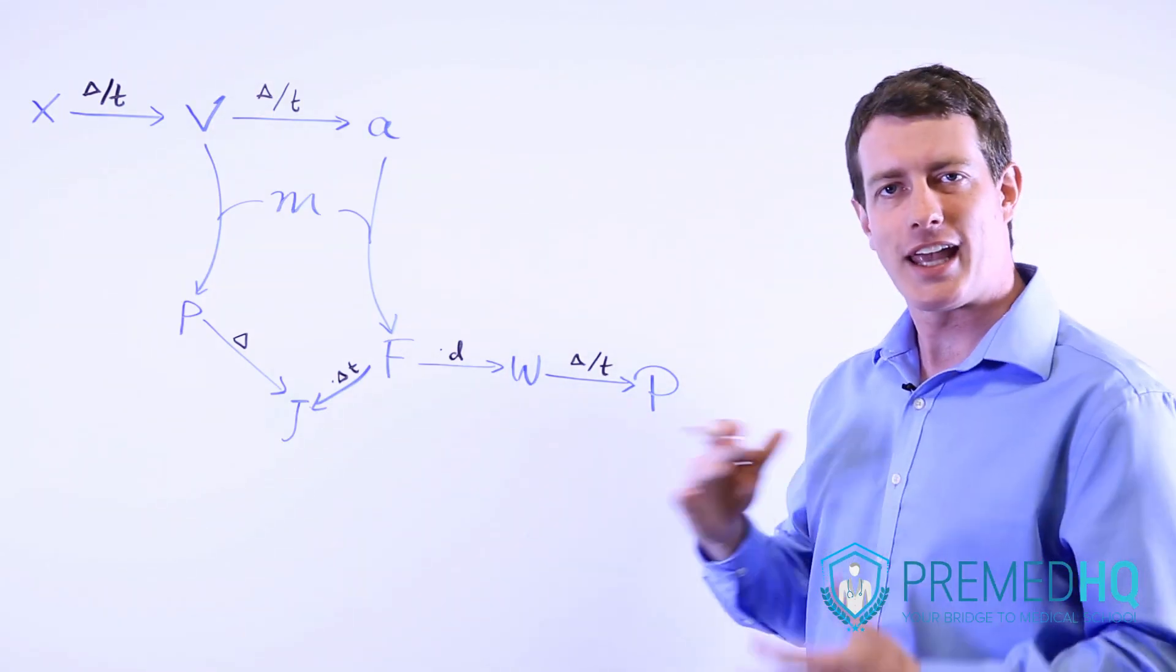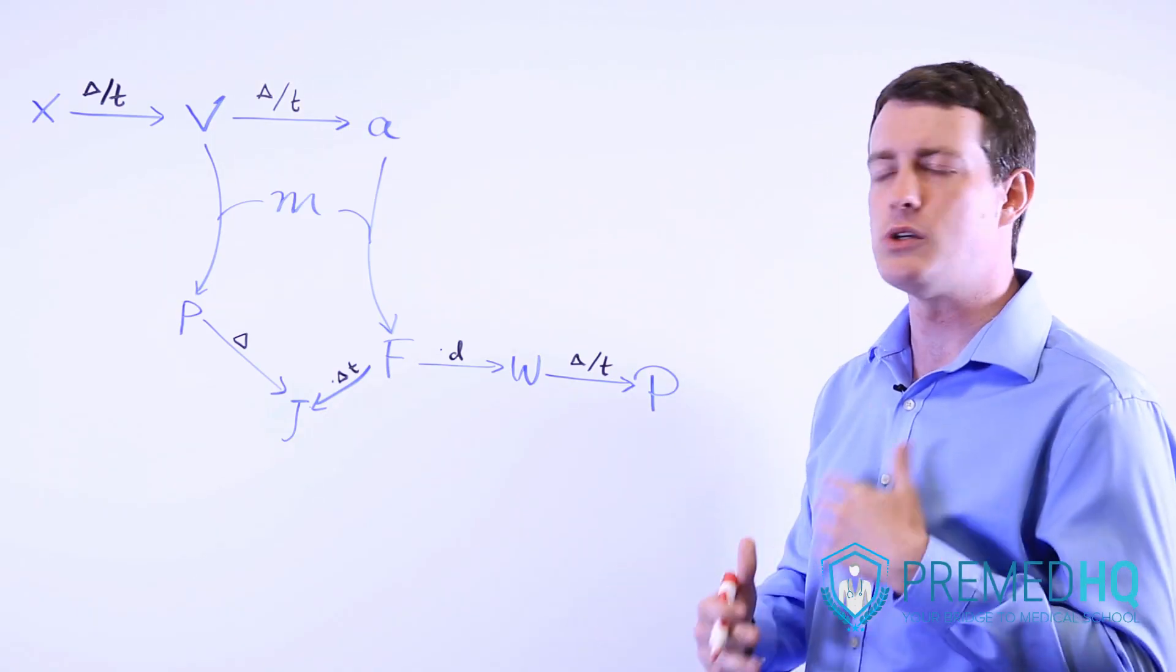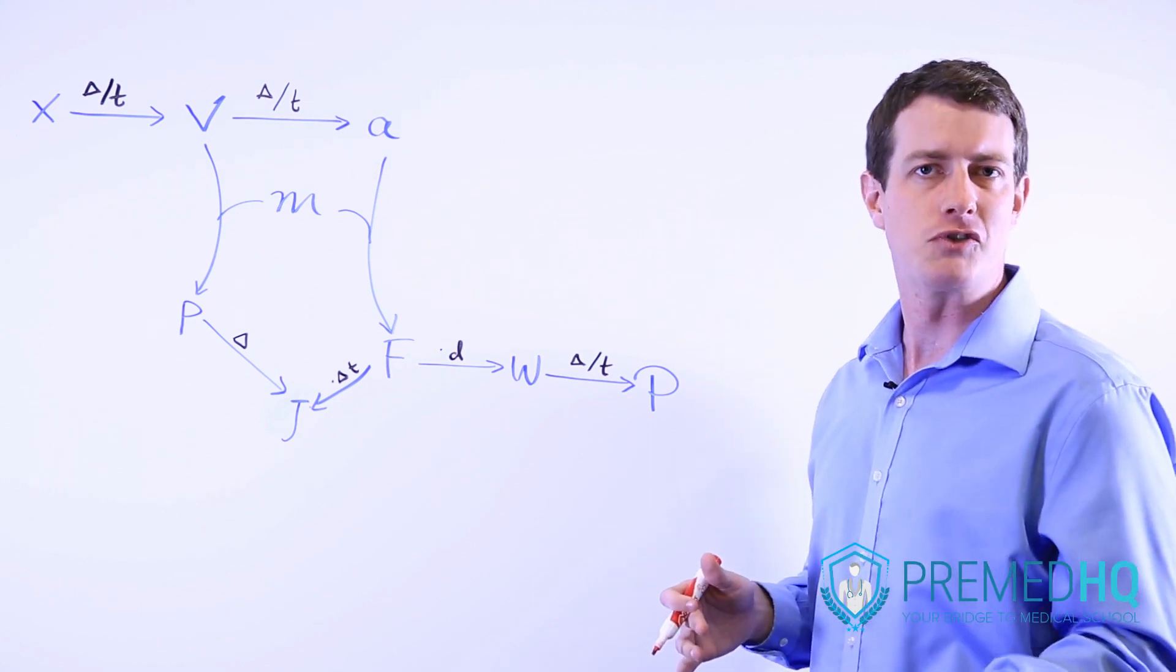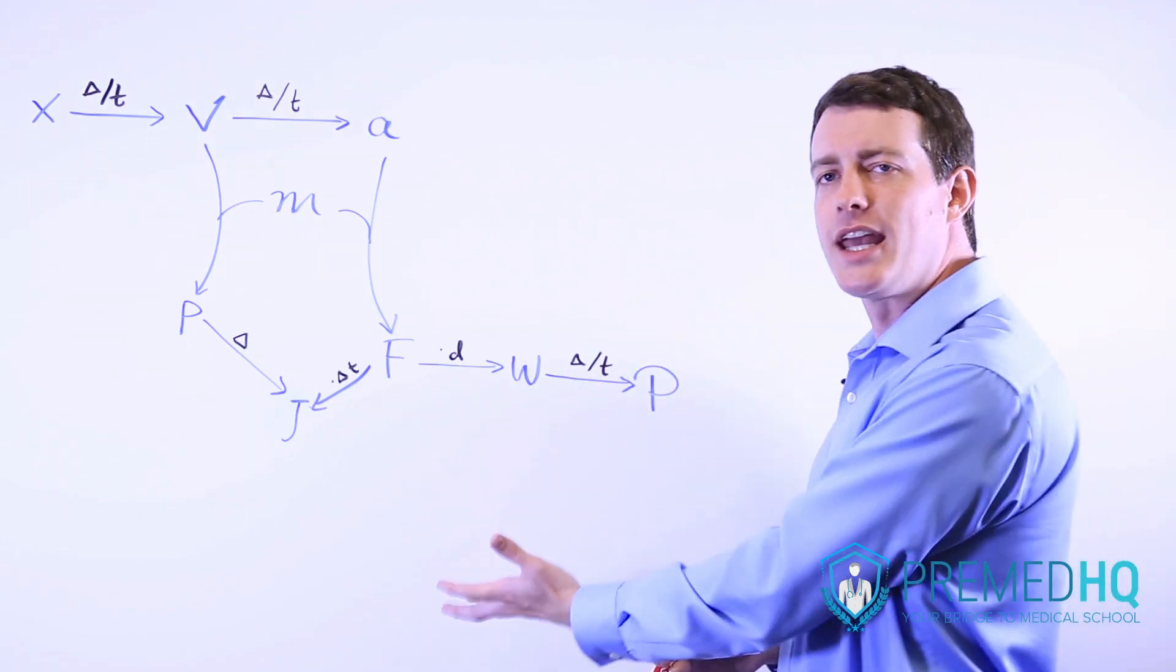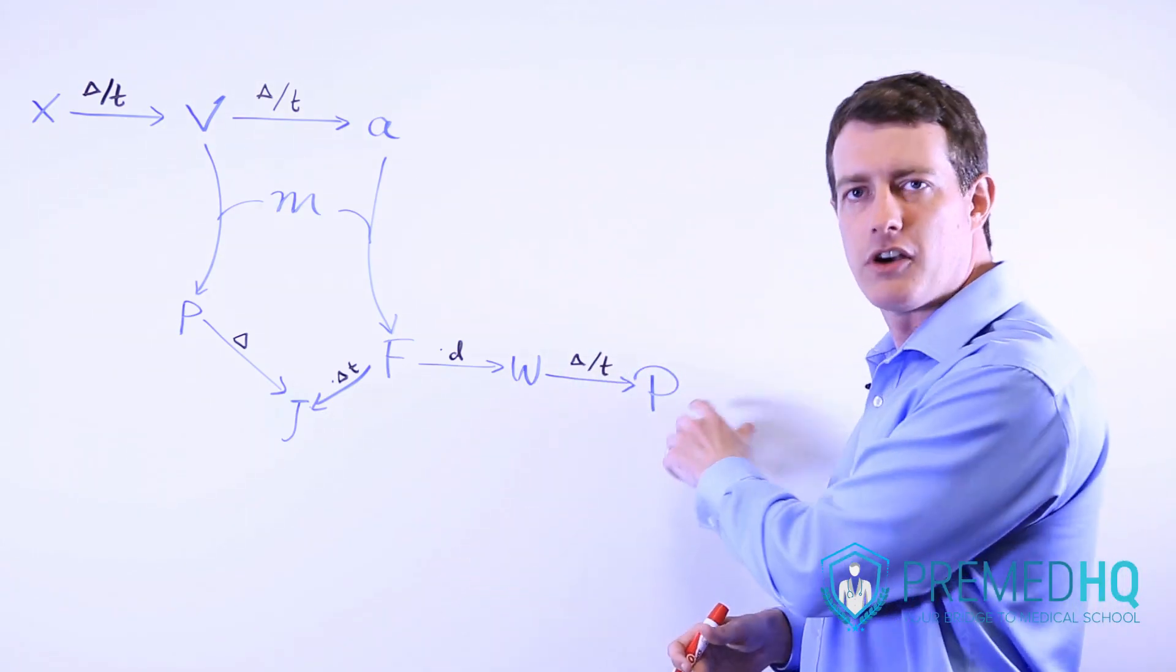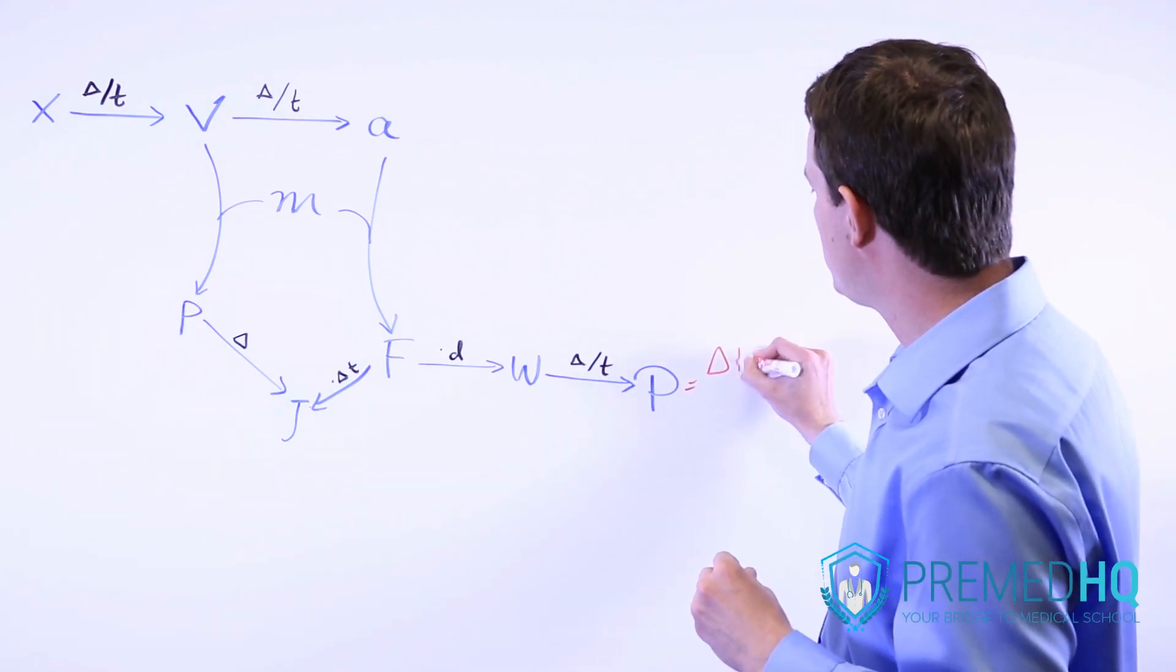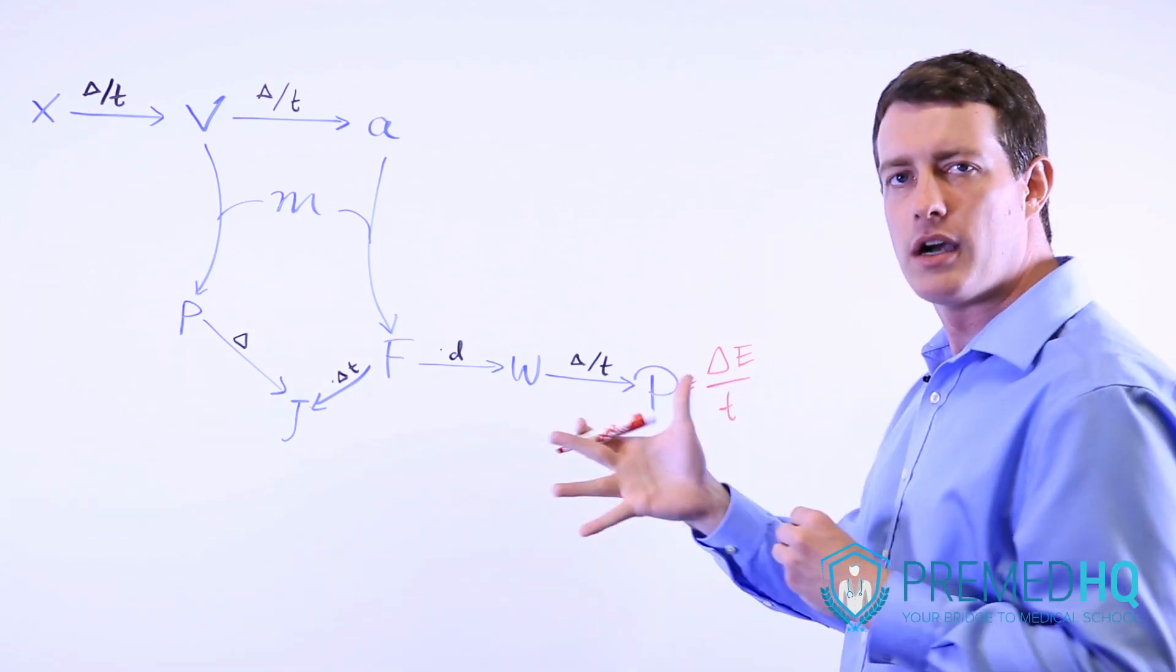Power relates not only to mechanics and kinematics type equations, but also relates to electricity and electrical power that's generated by resistors, for example. So this is a point that allows us to connect electricity with mechanical problems. And so power is a very important thing to be comfortable with. You can also look at power as the change in energy over time. That's another way that power can be described.